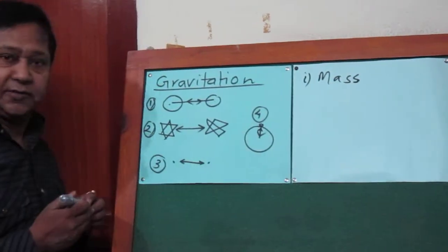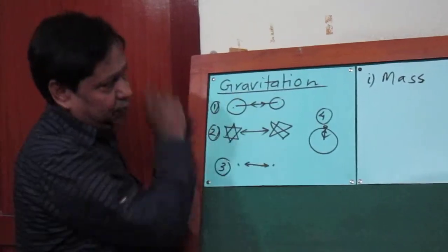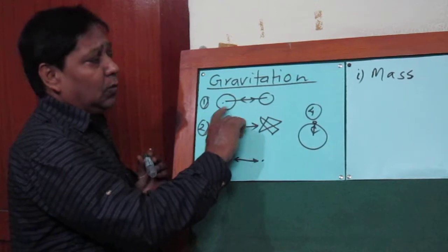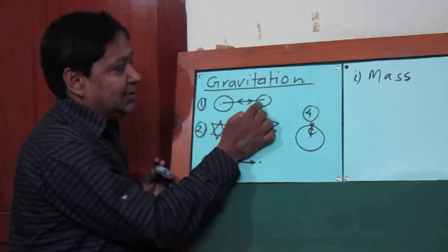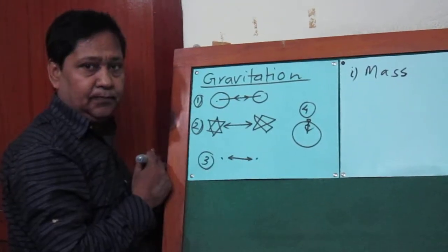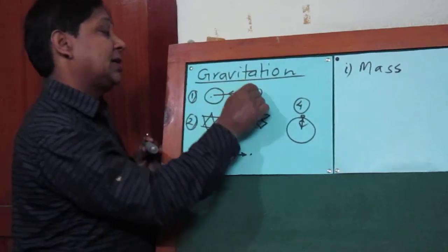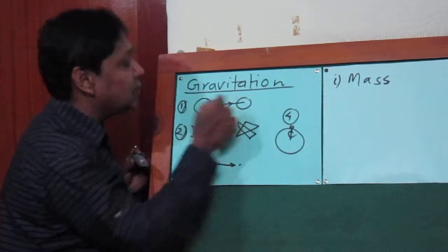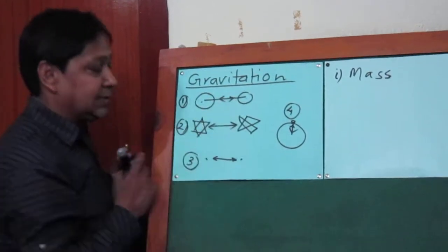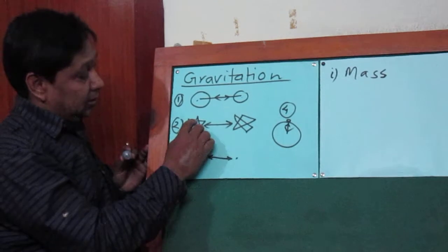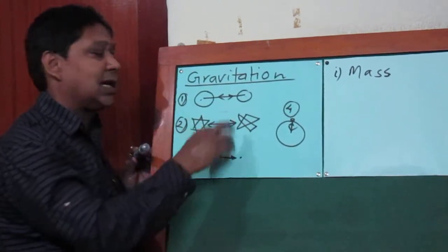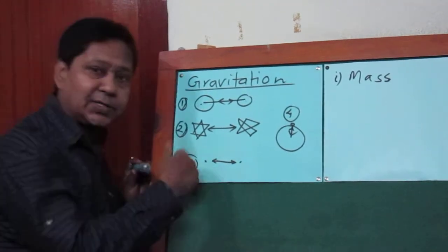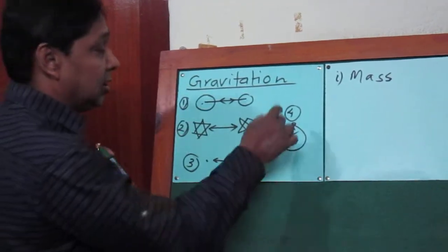Now let's talk about the second point. This first body attracts the second body towards its center — but this is not a unidirectional force. The second one also attracts the first one towards its center. In the same way, not only does the first star attract the second star, the second star also attracts the first star, and both dust particles attract each other.